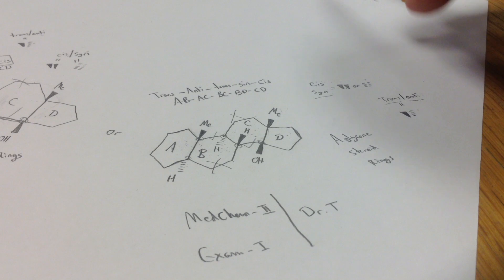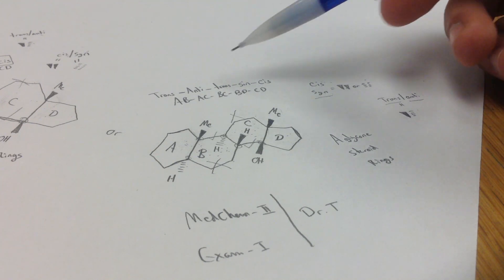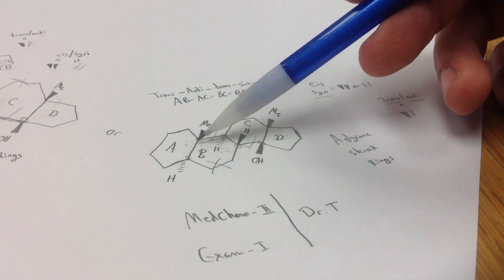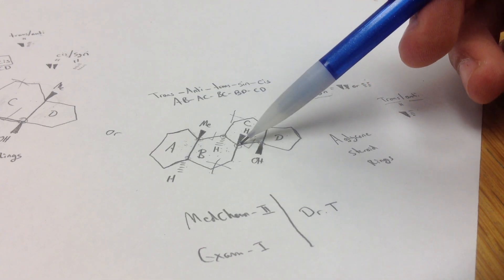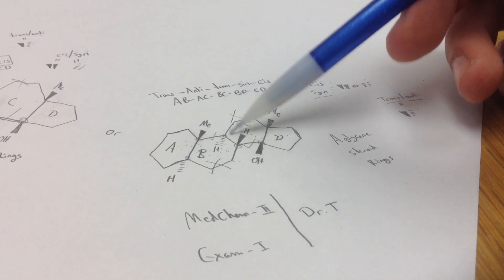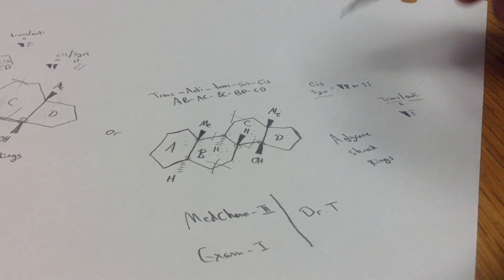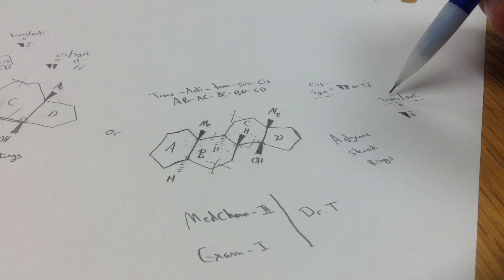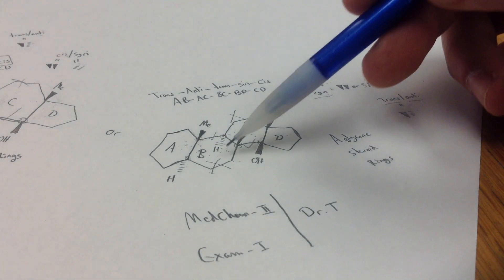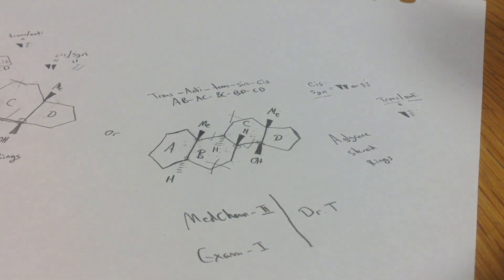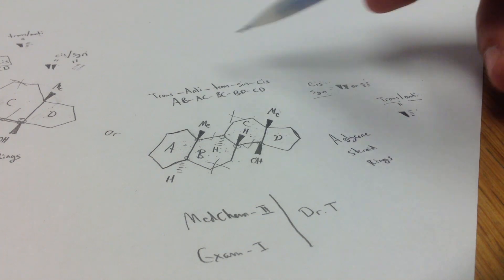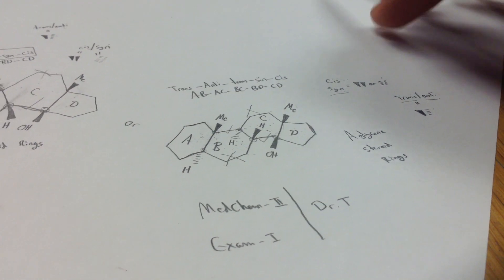In class, I know he went over how to name these, but he really didn't go over this part here, where if you look down here, you have to skip this one up here. So if you just follow that and know that sin and anti are the same thing as cis versus trans, but for when you skip a ring, then you should be good. And this is the types of questions that he likes to ask on his exam.